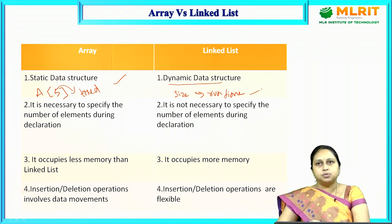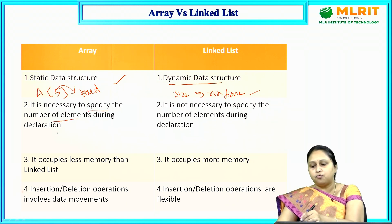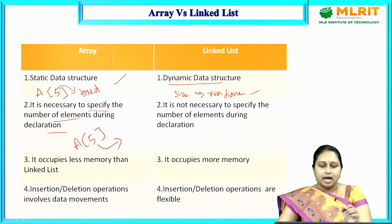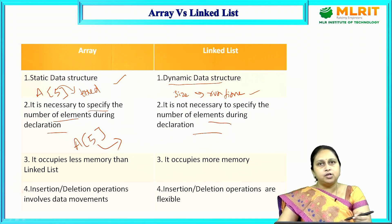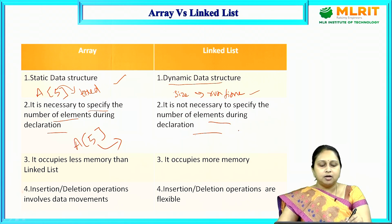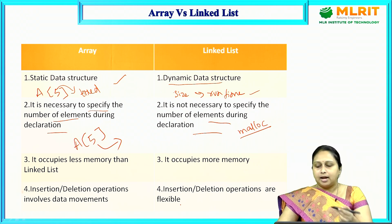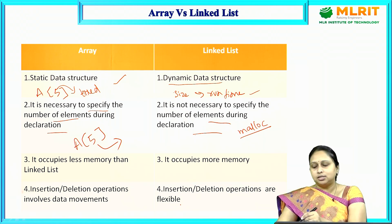The next difference: in an array it is necessary to specify the number of elements during declaration — for example, 'a[5]'. In a linked list we are not specifying any size for the number of elements. The number of elements can be determined at runtime using dynamic memory allocation functions, such as the malloc function, to allocate memory dynamically.